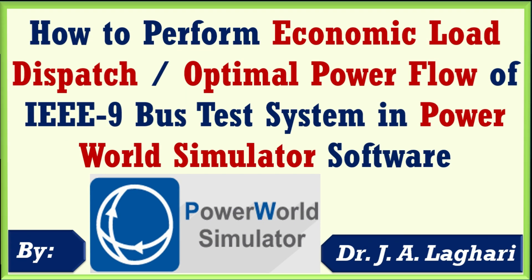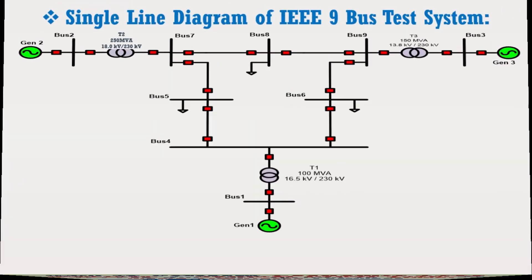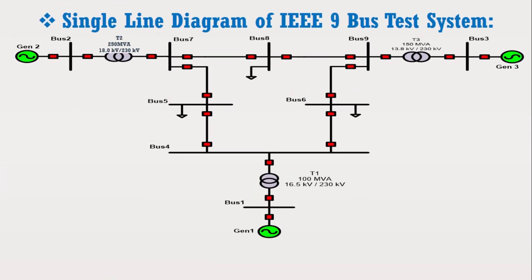Consider the figure which shows the single line diagram of the IEEE 9 bus system. We have to design this model of the IEEE 9 bus system and perform its economic load dispatch. At the first stage we have to design the IEEE 9 bus system model in PowerWorld simulator software, and later on we have to perform its economic load dispatch.